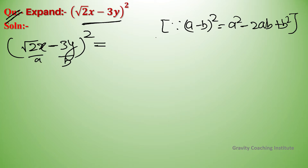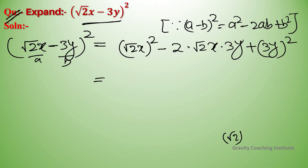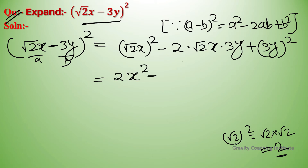Expanding: (√2x)² - 2·(√2x)·(3y) + (3y)². Ab √2 ka whole square equal to 2, aur root 2 into root 2 multiply karte hain, to a² term milti hai.